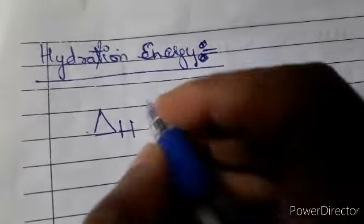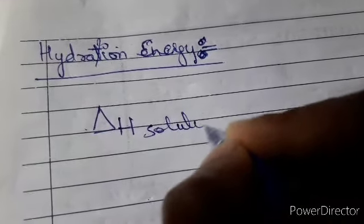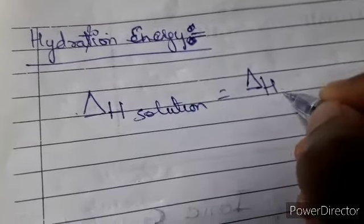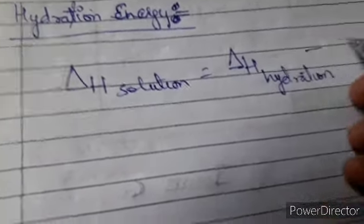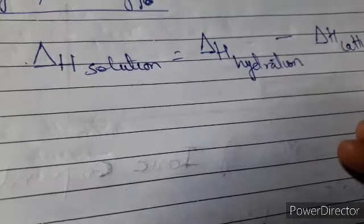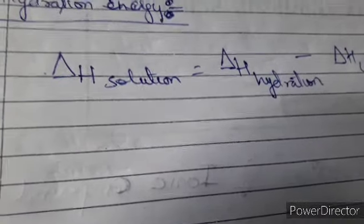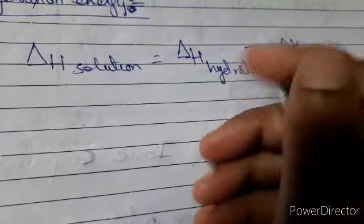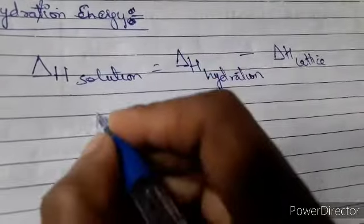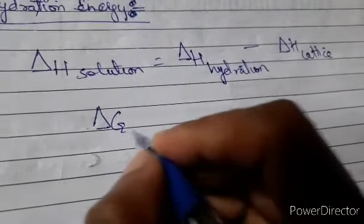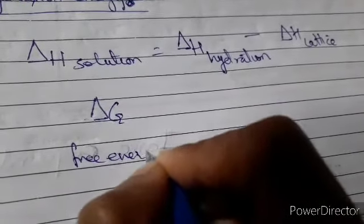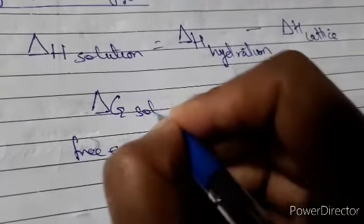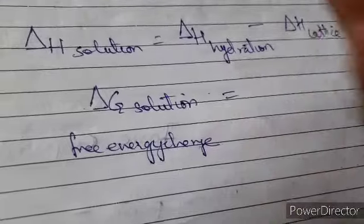Overall, the enthalpy change for dissolving — the enthalpy of solution — is the difference between hydration energy and lattice energy. Note that thermodynamics may not be fully clear yet since you haven't studied it yet, but Gibbs free energy (ΔG = ΔH − TΔS) is the relevant concept. When the ionic compound dissolves in water, hydration energy is the energy released in that process.